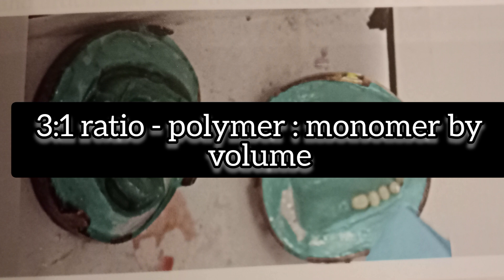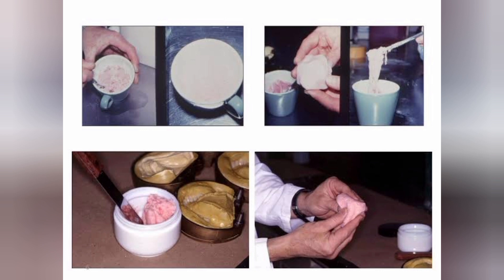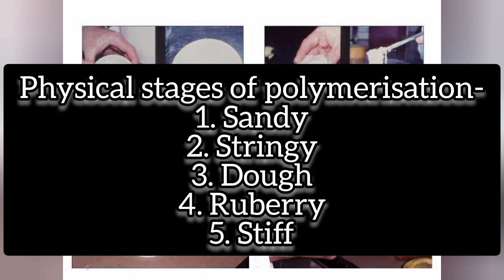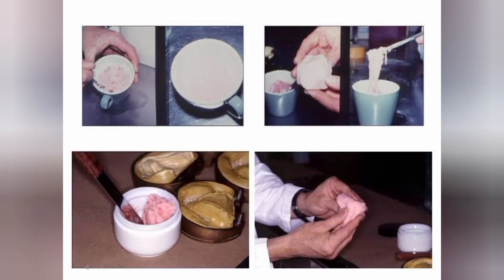So we take three parts polymer and one part monomer, dispensed in a porcelain jar. The jar is closed tightly to prevent vaporization of monomer. The material is then packed into the mold space in the dough stage. Remember the physical stages of polymerization: sandy, stringy, dough, rubbery, and stiff. When the mix reaches the dough stage, we pack it.